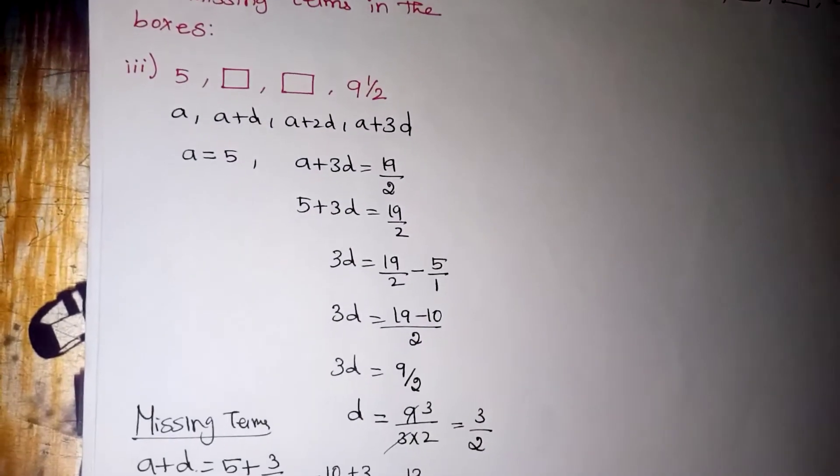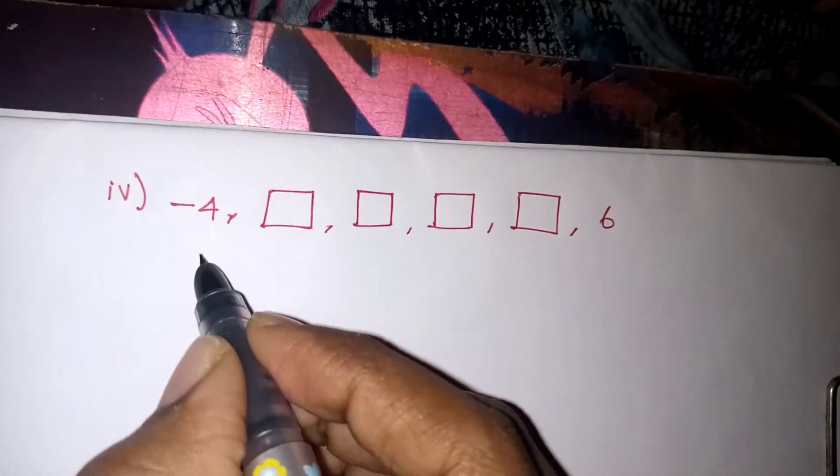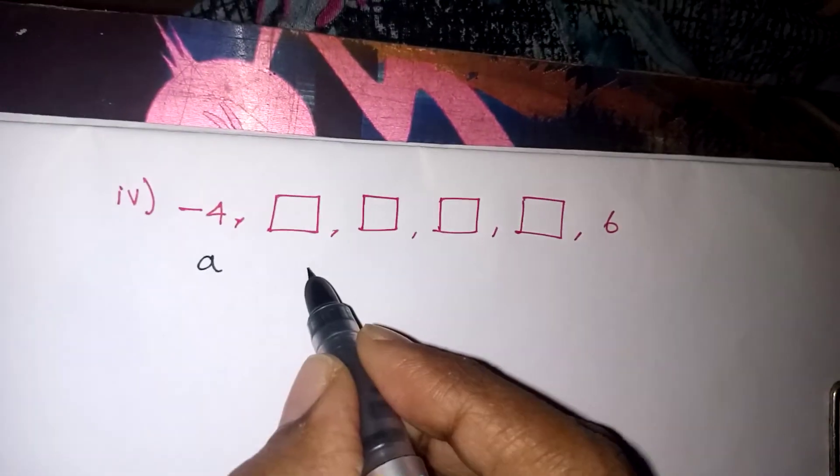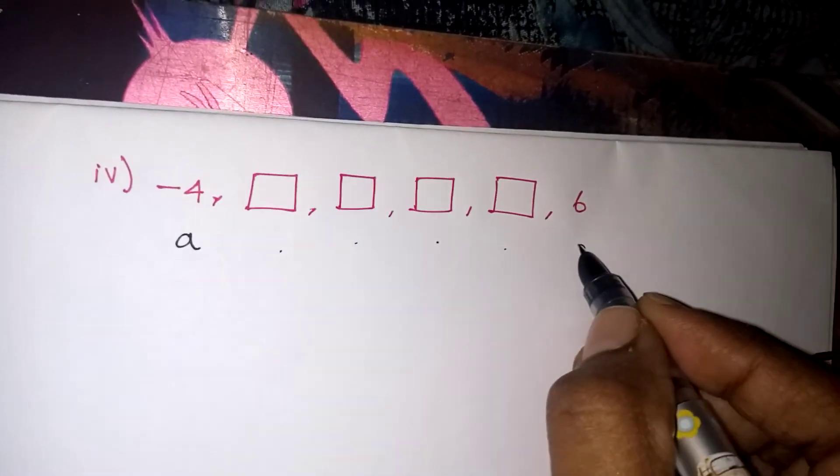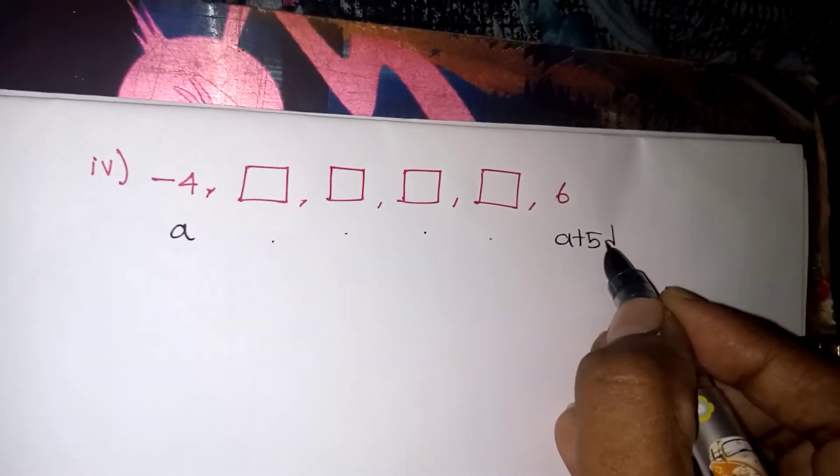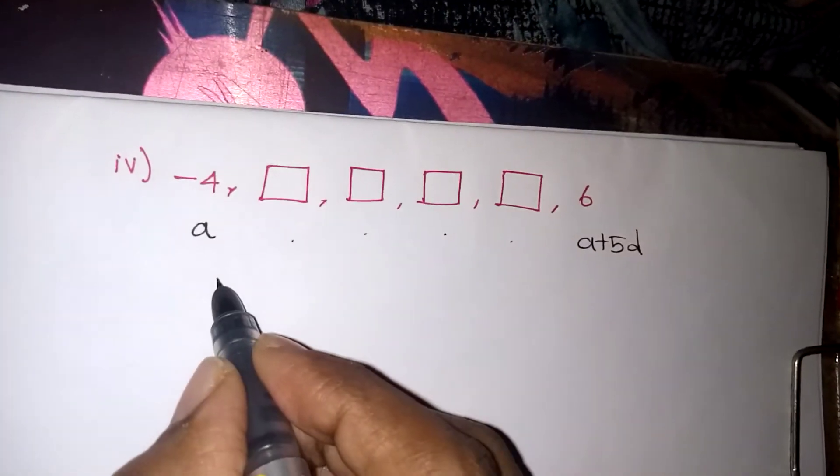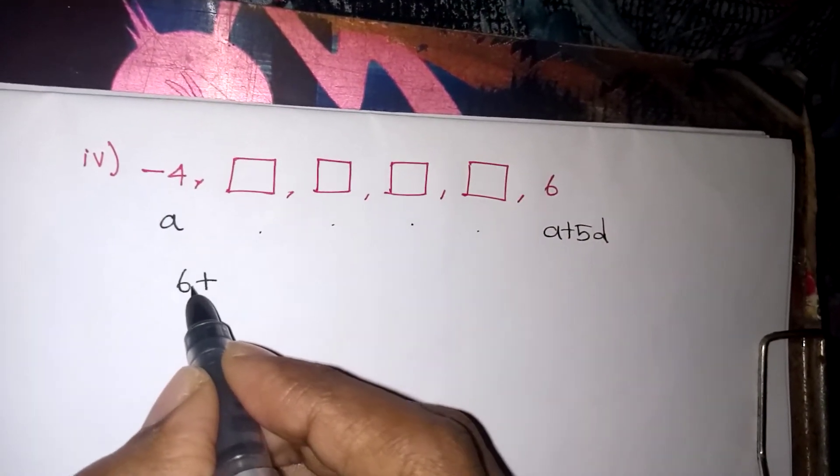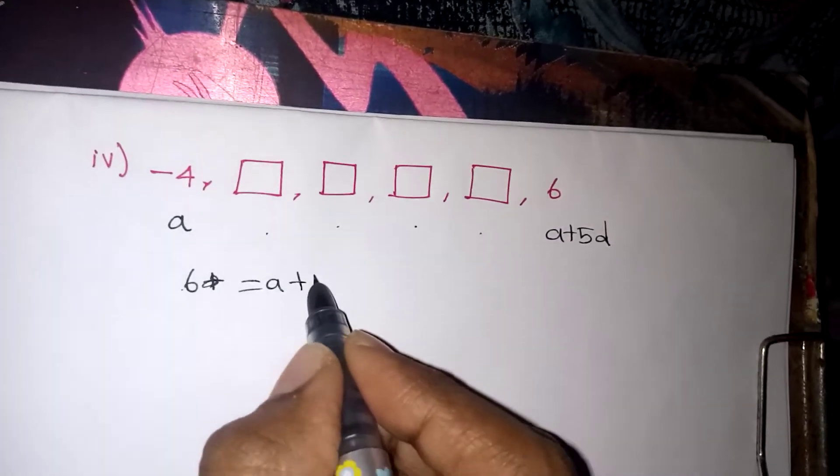We will go to one more problem now. This is also the same way. The first number should be taken as A. This is A plus D, A plus 2D, A plus 3D, A plus 4D. This is A plus 5D. So only these 2 terms are given to us. We can do it directly.